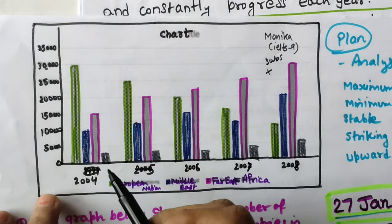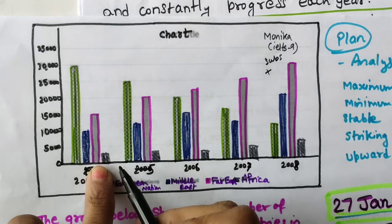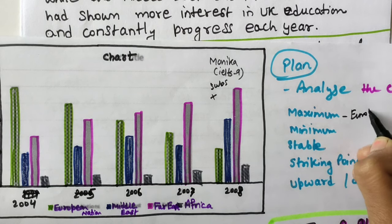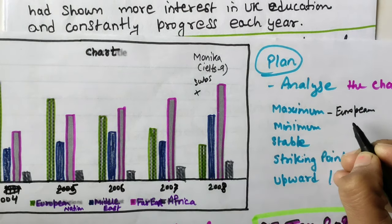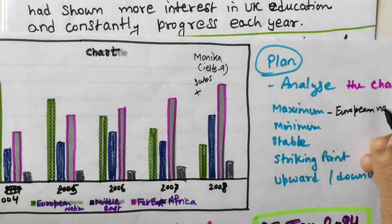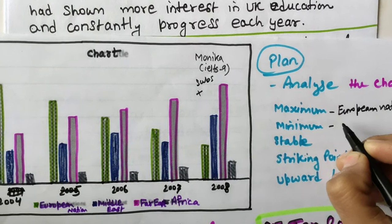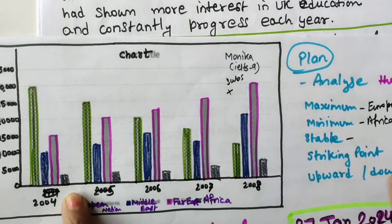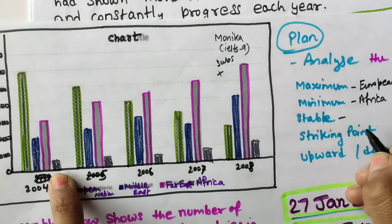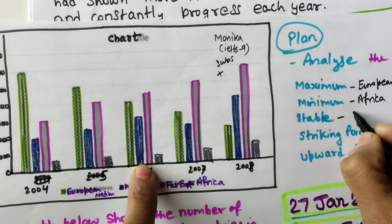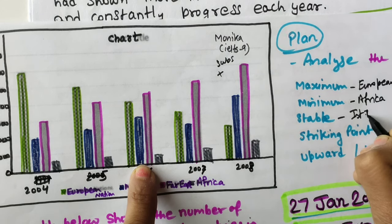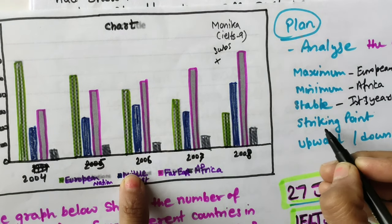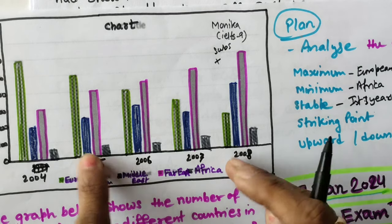Now the planning homework: in the initial years, the maximum participation was from European nations. The minimum participation was from African students. A stable pattern can be seen in the first three years for African students - the number of students was stable.